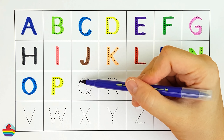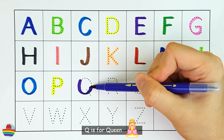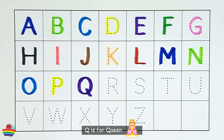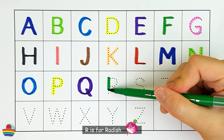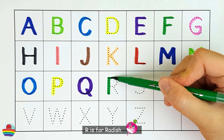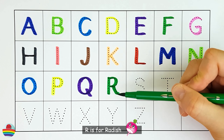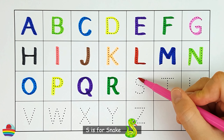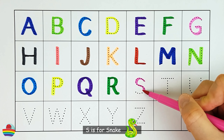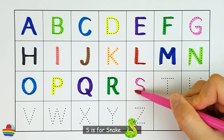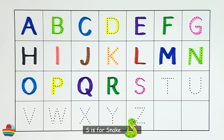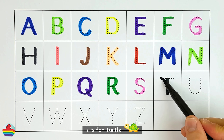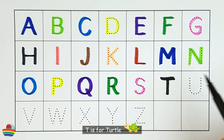Q. Q is for queen. Q. R. R is for radish. R. S. S is for snake. S. T. T is for turtle. T.